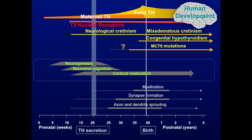The deficiency of thyroid hormone during fetal development may lead to several syndromes. Classically, we distinguish between neurological cretinism and myxedematous cretinism. The main difference between these two forms is the timing of the brain lesion: neurological cretinism occurs around the second trimester of pregnancy, and myxedematous cretinism probably after birth, during neonatal life. This is similar also to what happens in congenital hypothyroidism.